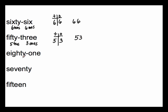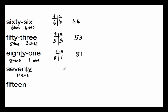Eighty-one: the word eighty tells me I have eight tens, and one tells me I have one one. On the place value chart, I have eight tens and one one — written in standard form, that's 81. Next is seventy: seventy tells me I have seven tens, and there's nothing else written, so all I have is seven tens. I write seven in the tens place and put a zero in the ones place. So I have 70.